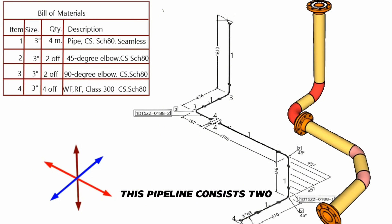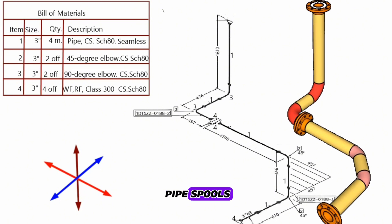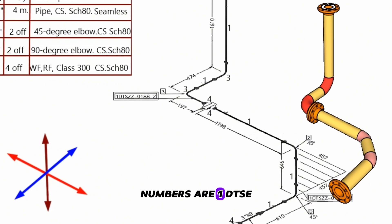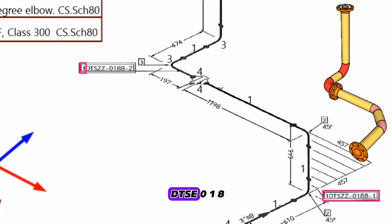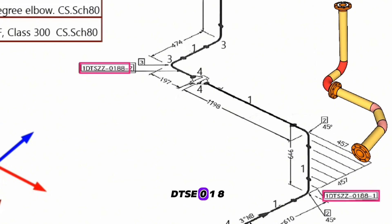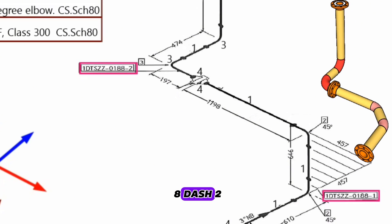This pipeline consists of two pipe spools, numbers 1DTSCZ0188-1 and 1DTSCZ0188-2.